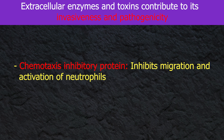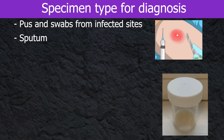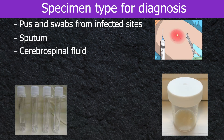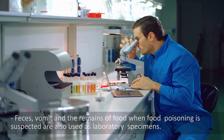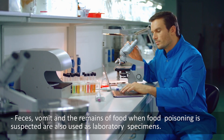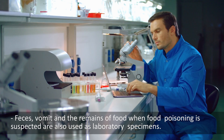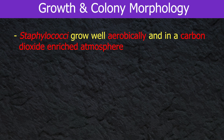Person swabs from infected sites, sputum, cerebrospinal fluid, and blood for culture are useful for the diagnosis of these organisms. Faeces, vomit, and the remains of food when food poisoning is suspected are also used as laboratory specimens.